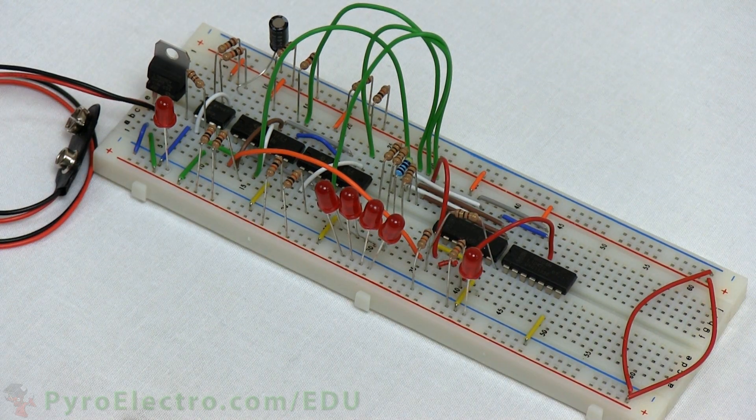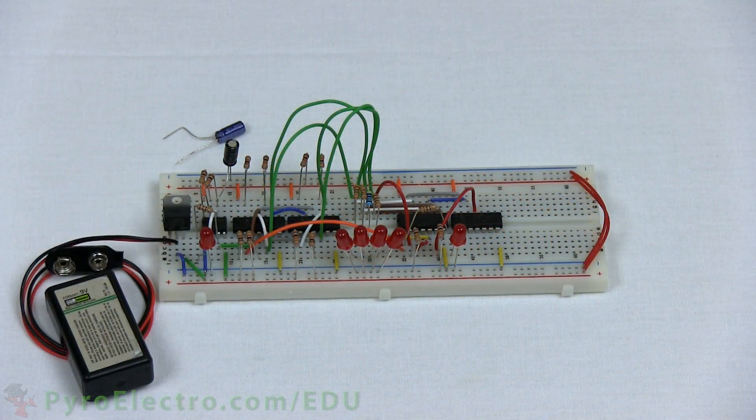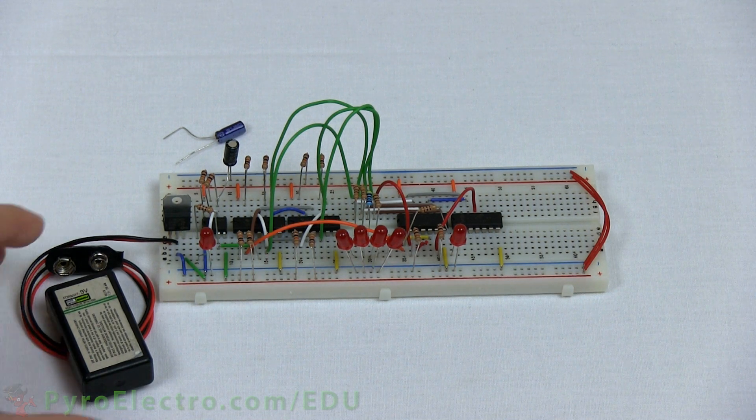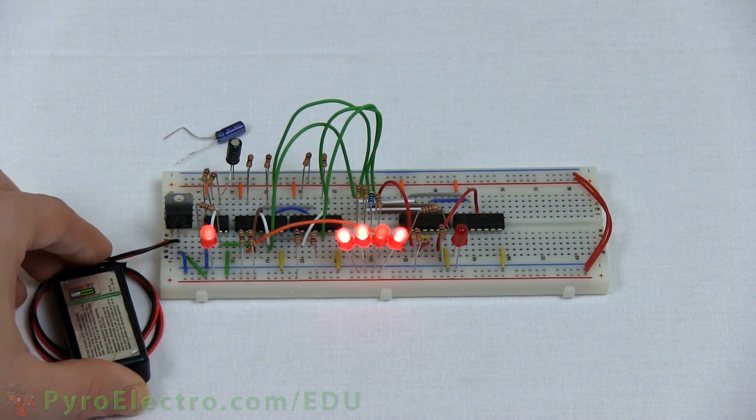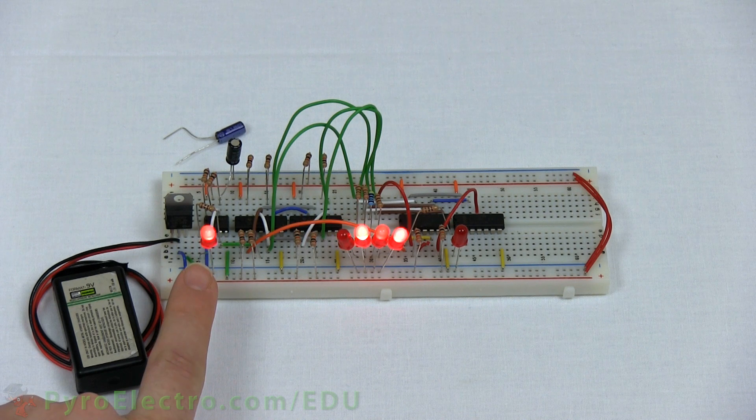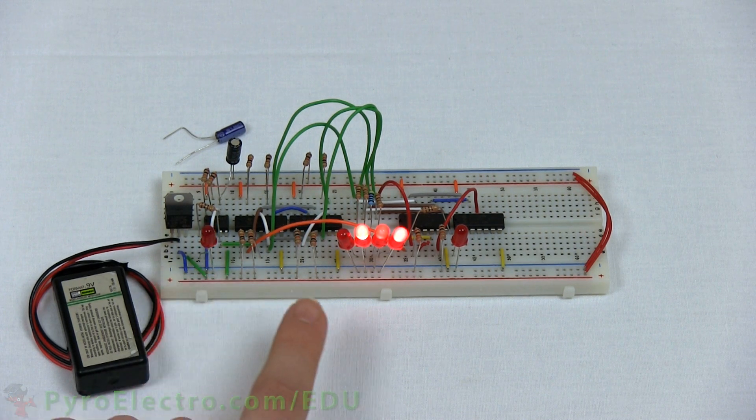With the circuit finally built, I'm sure you're very anxious to power it up and see how it works. So we'll connect the 9 volt battery to the system, and voila! The LEDs light up and chase each other in periods of 4.